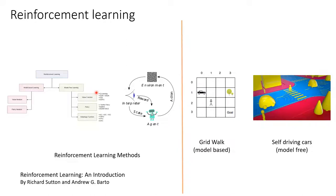RL is different from traditional supervised learning because the data is not available nor labeled. It's also not unsupervised because we define a reward function which helps the agent reach its goal. Hence, RL is neither completely supervised, unsupervised, nor even semi-supervised. Depending on the environment and the availability of the transition probability distribution — which is the probability of state transitions given a particular action — RL is broadly divided into model-based and model-free learning methods.